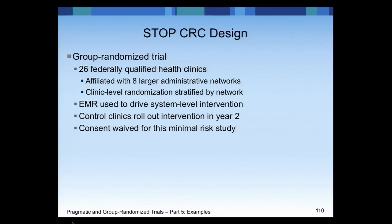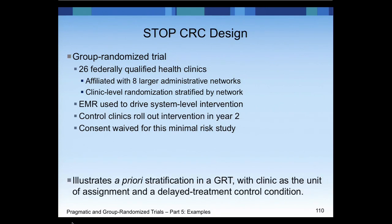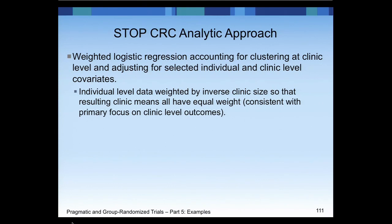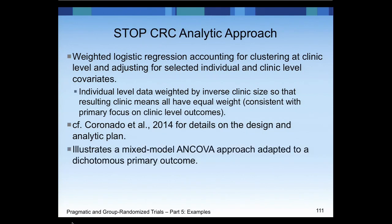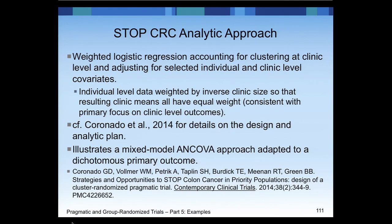The electronic medical record drives the system-level intervention and is also the source of data for this trial. Control clinics will roll out the intervention in the second year, and consent was waived for participants because this was considered a minimal risk study. This example illustrates a priori stratification in a group randomized trial with clinic as the unit of assignment, and a delayed treatment control condition. The analysis approach is a weighted logistic regression accounting for clustering at the clinic level, adjusting for individual and clinic-level covariates. Individual-level data will be weighted by the inverse of clinic size so that resulting clinic means all have equal weight. A paper by Gloria Coronado published in 2014 provides details on the design and analytic plan, illustrating a mixed-model ANCOVA approach adapted for a dichotomous outcome variable.